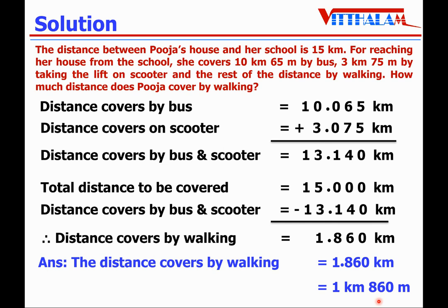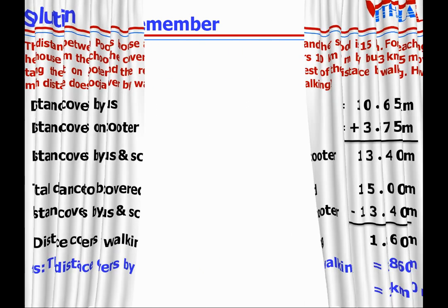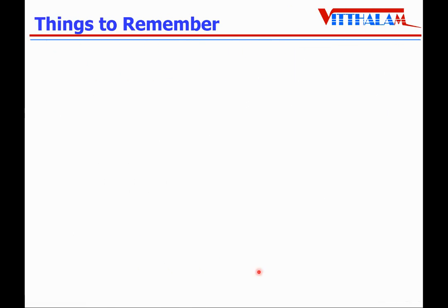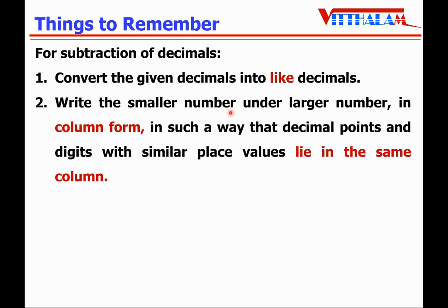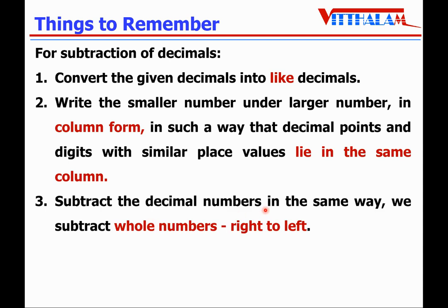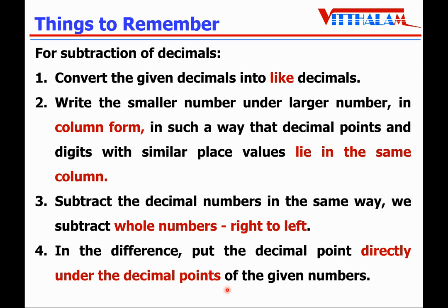This is how you can do subtractions of decimals. Let's summarize what we have learnt. Things to remember for subtraction of decimals: Step 1 — convert the given decimals into like decimals. Step 2 — write the smaller number under the larger number in column form so that decimal points and digits with similar place values lie in the same column. Step 3 — subtract right to left. Step 4 — put the decimal point directly under the decimal points of the given numbers.